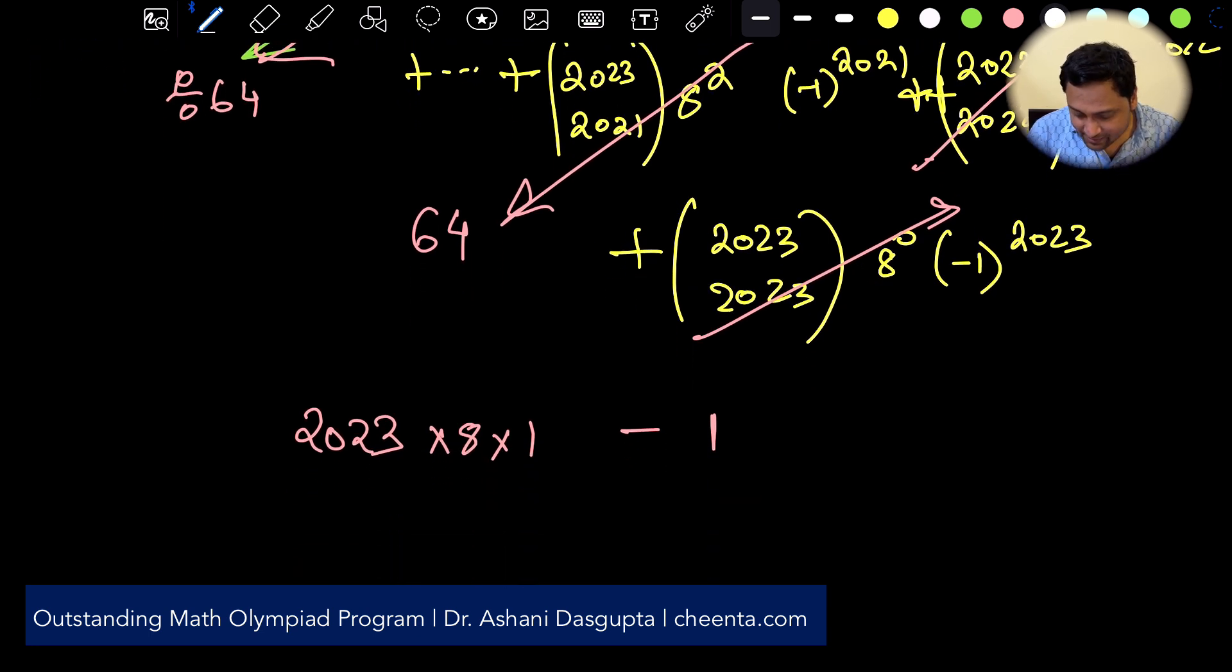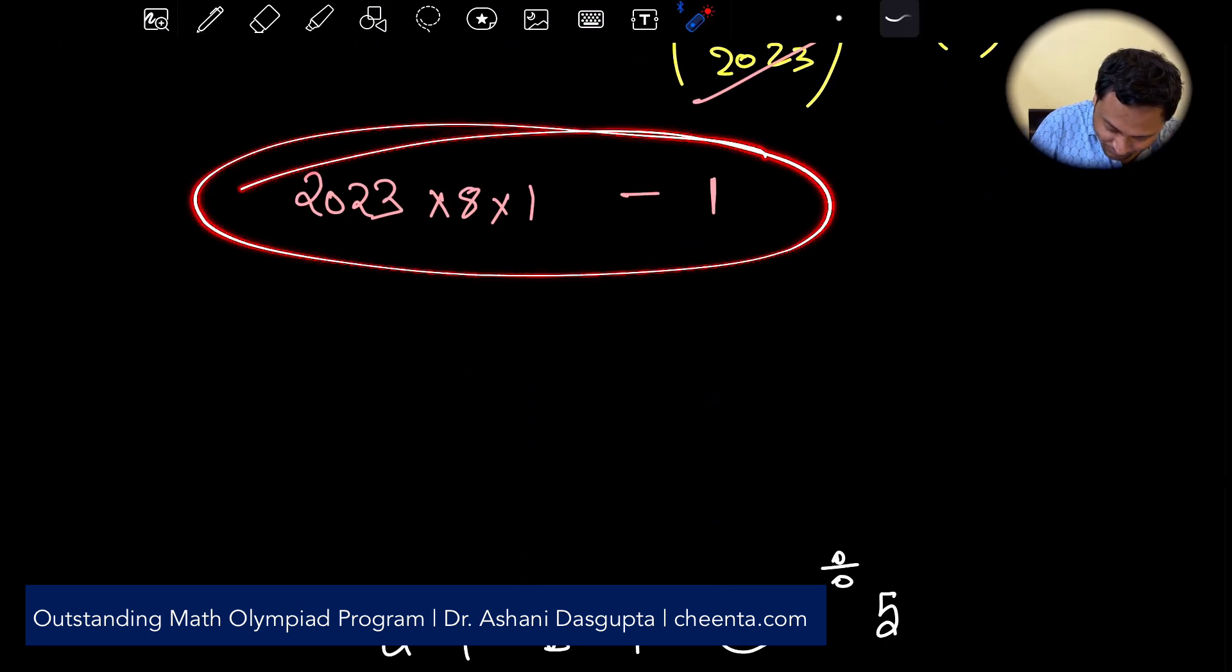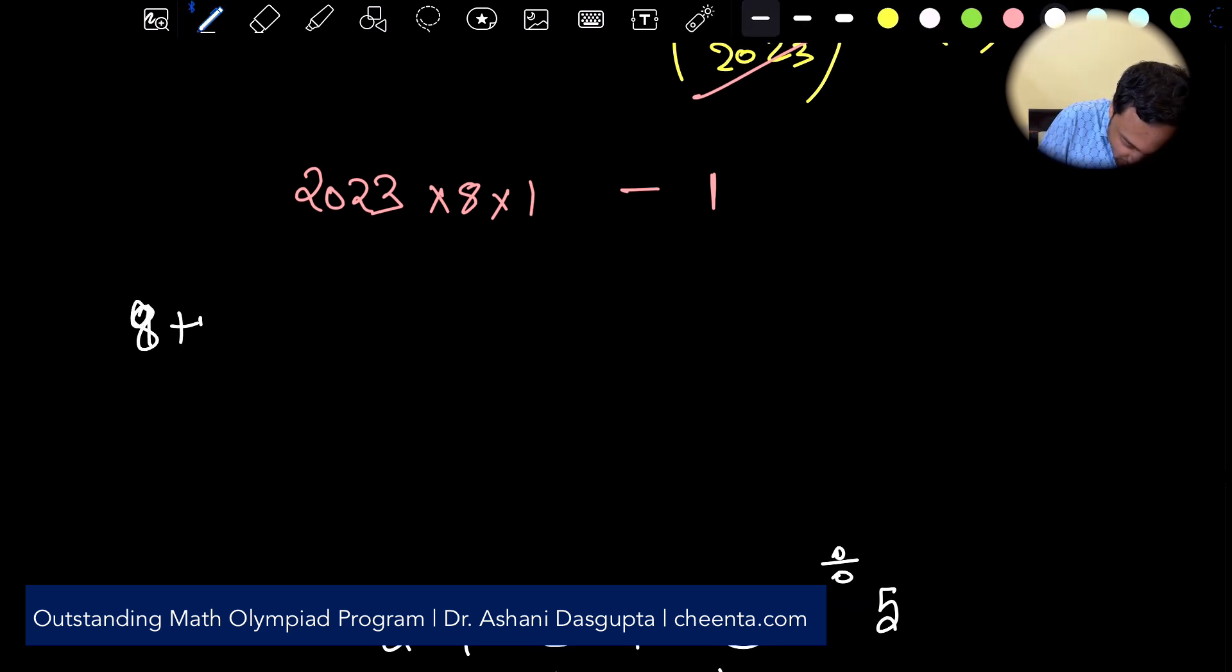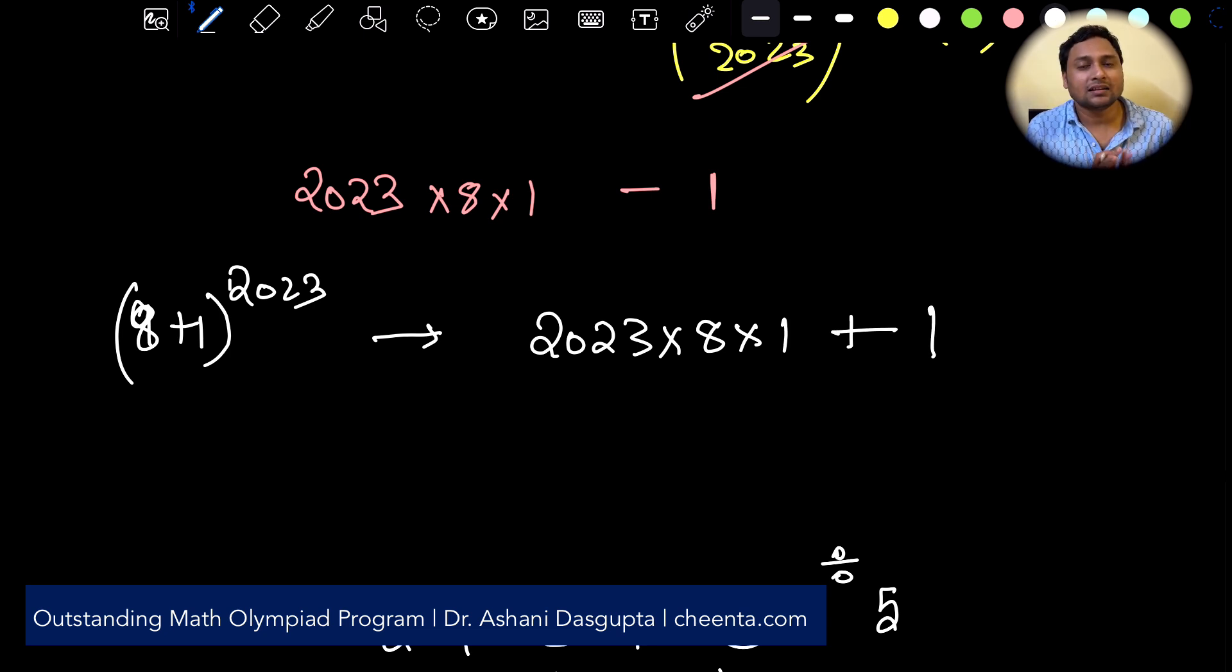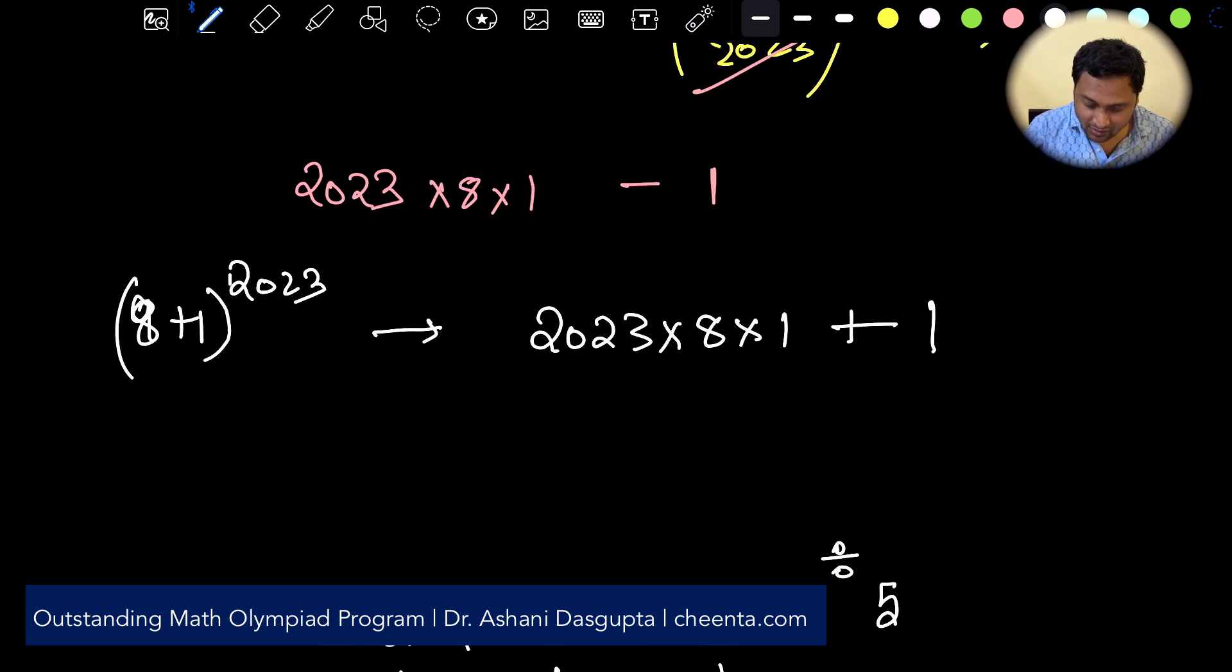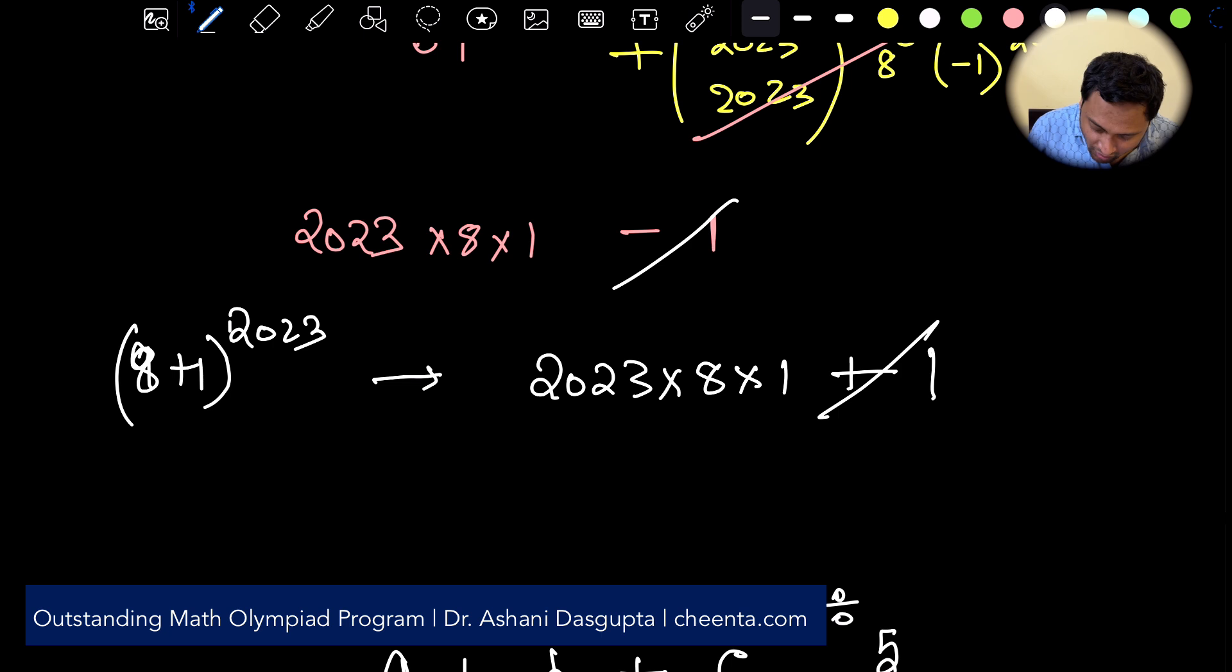So the first thing produces this and what would be the second one? So the second one was now 8 plus 1 raised to the power 2023. So if you do the same computation you will see 2023 times 8 times 1 plus 1. The last term will be plus 1 because instead of minus 1 each of them will be plus 1 raised to the power 2023. So now these two will just cancel off.